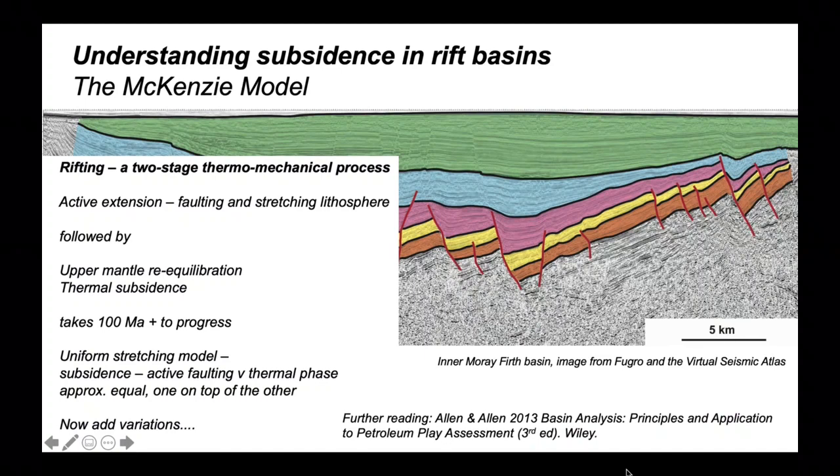This second subsidence phase takes 100 million years plus to progress. We've explored this using the uniform stretching model, where subsidence due to active faulting and the subsequent thermal subsidence phase lie one on top of the other. They generate approximately equal amounts of subsidence. Now's the time to add variations.